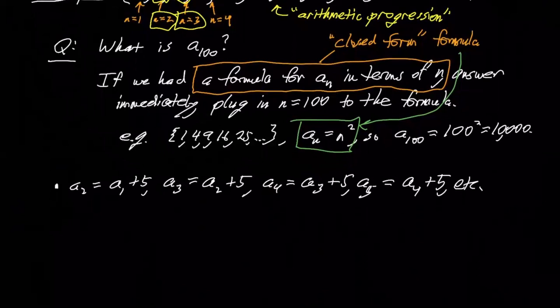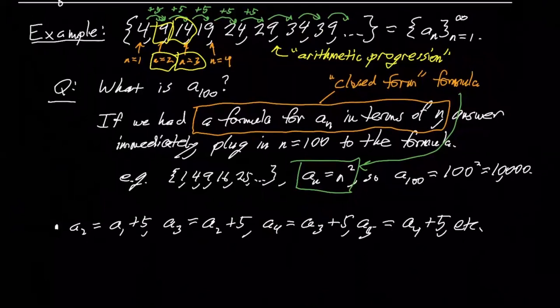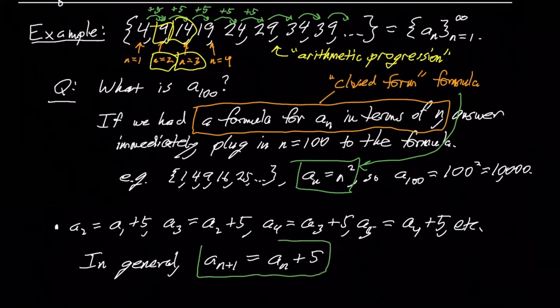And this gets boring very quickly. So instead you just say, well, okay, I can get each term in the sequence from the one before, right? I can just say it's plus five. So sort of, we would say that in general, if we want to go from the nth to the n plus first term, so the n plus first term is just the nth term plus five, right? And this is called recursive because you're basically defining stuff in terms of itself or in terms of previous things. This is sort of described in terms of itself.